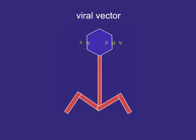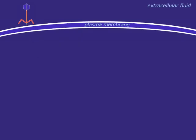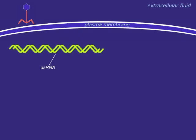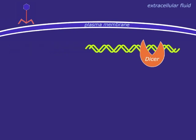RNA interference is introduced in the cell as double-stranded RNA. This molecule is degraded by the Dicer enzyme into fragments called small interfering RNA, siRNA.